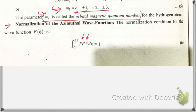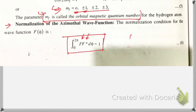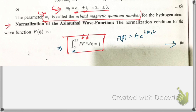The normalization condition is the integral of F(φ)·F*(φ) equal to one, integrated from 0 to 2π. We have taken F(φ) = A·e^(i·ml·φ), so its complex conjugate F*(φ) = A·e^(−i·ml·φ). This is the normalization condition we use.